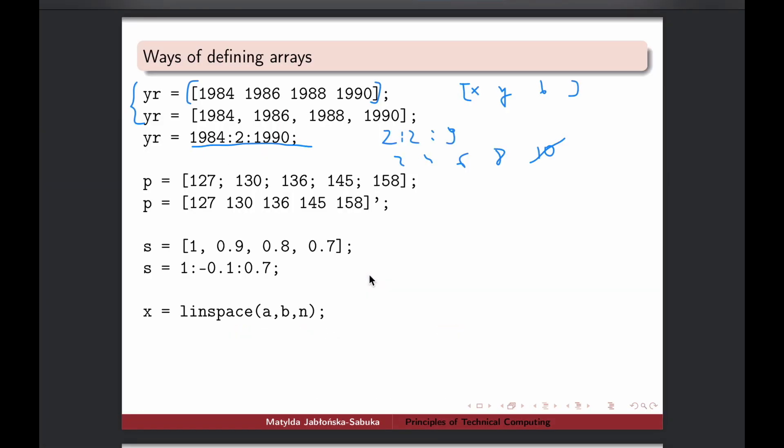Now as I said, vectors can be arranged either as rows or as column vectors. This is very important that you keep track of which case you have. Because in algebra, you have to be aware of the dimensions of your vectors or later matrices in order to do calculations.